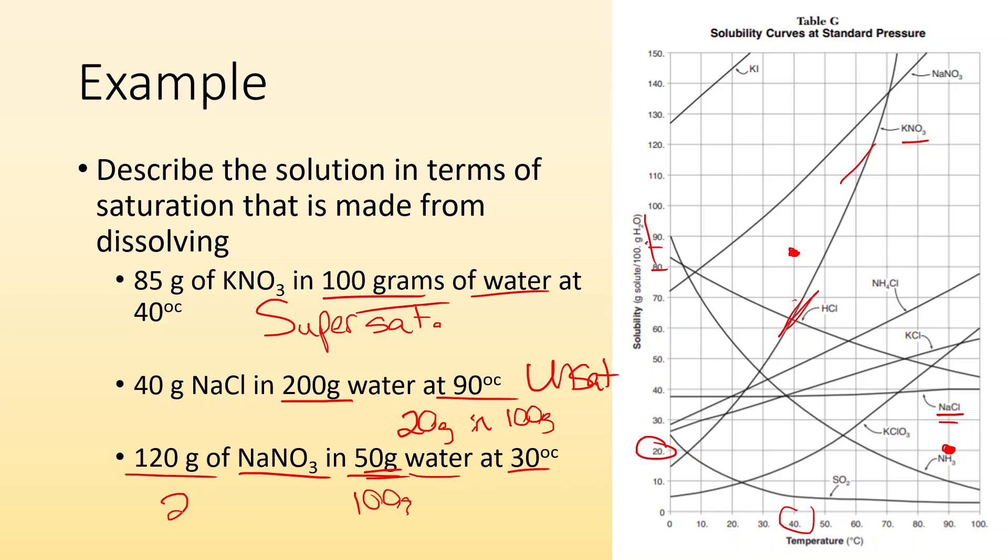So it'd be 240 grams, which is like way off the chart. It's way up there. And at 30 degrees Celsius, it's going to be way up here. Where is that point compared to NaNO3? It's way above it. It's going to be supersaturated.